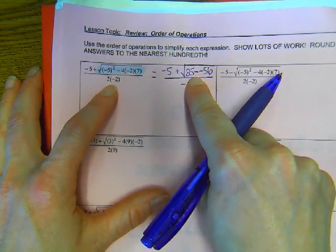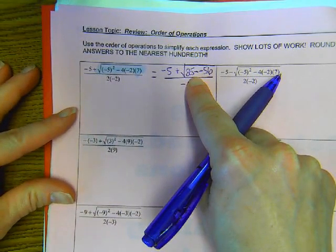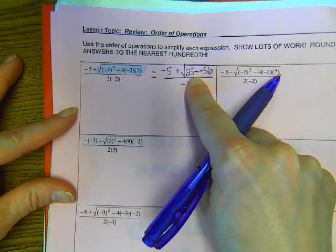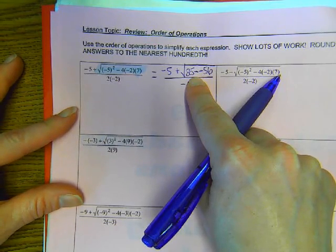25 plus 56. What is that? Use your calculator, guys. 81.